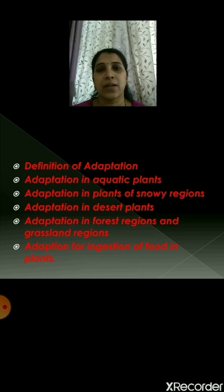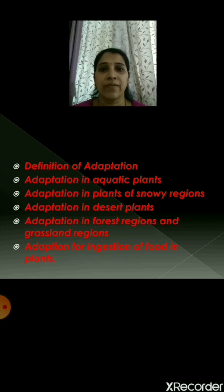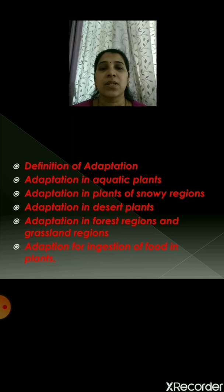Then we saw about the adaptation in desert plants. Desert plants are either leafless, or their leaves are small needles or modified into thorns. Because of this, they lose very little water by evaporation. The stems are green in color and that's why they can perform the process of photosynthesis.